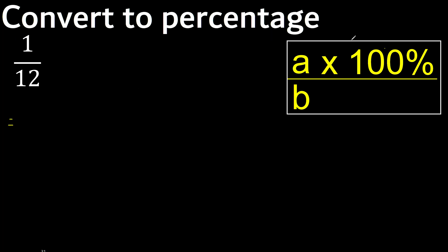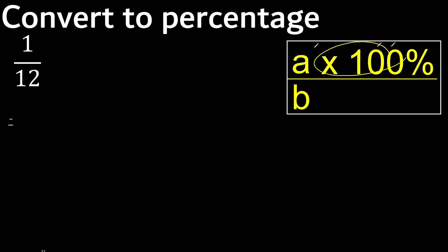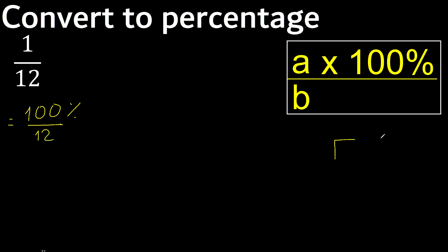Multiply by 100. 1 multiplied by 100 is 100%. Divide by 12. 100 divided by 12.